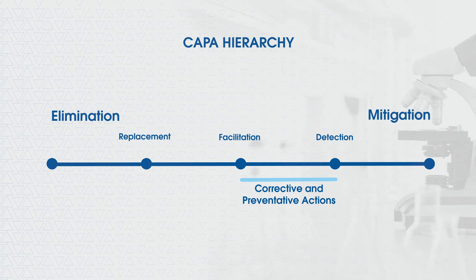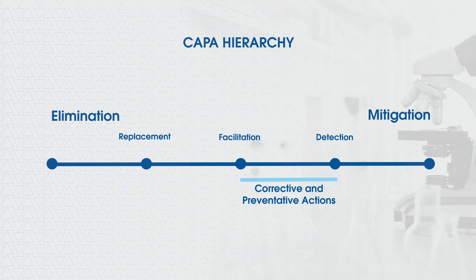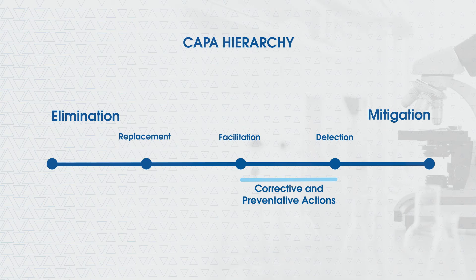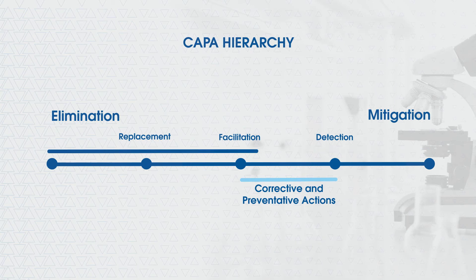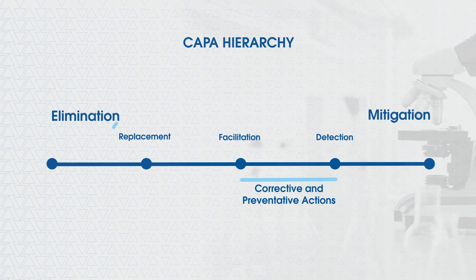But often in doing so, they're adding complexity, adding steps to an SOP. What we want to do is encourage investigators to move up the Kappa Hierarchy and identify ways to replace a technique, to replace a step, or eliminate the root cause altogether.